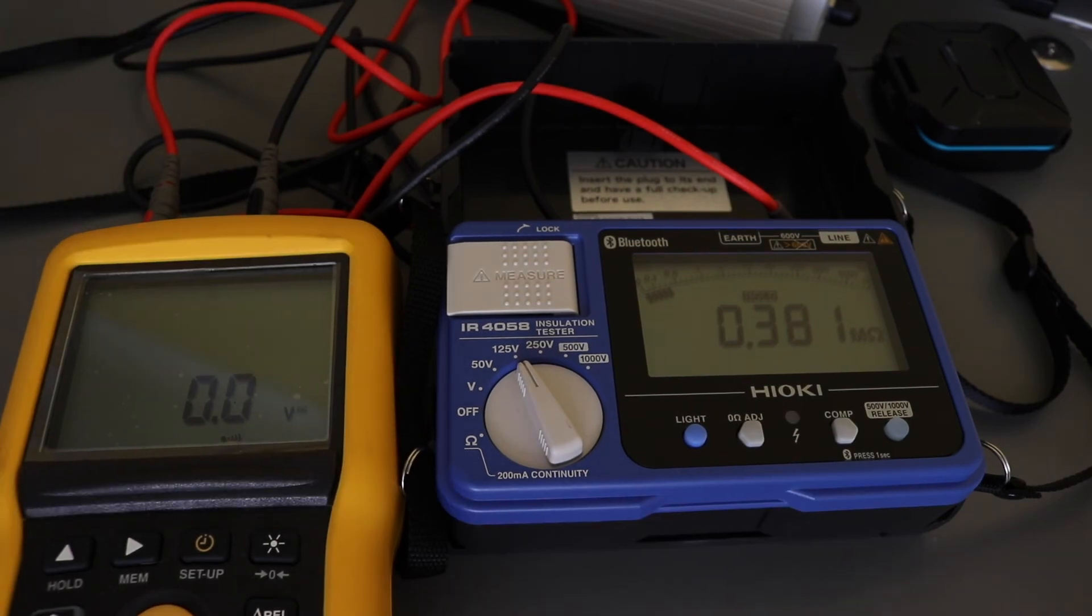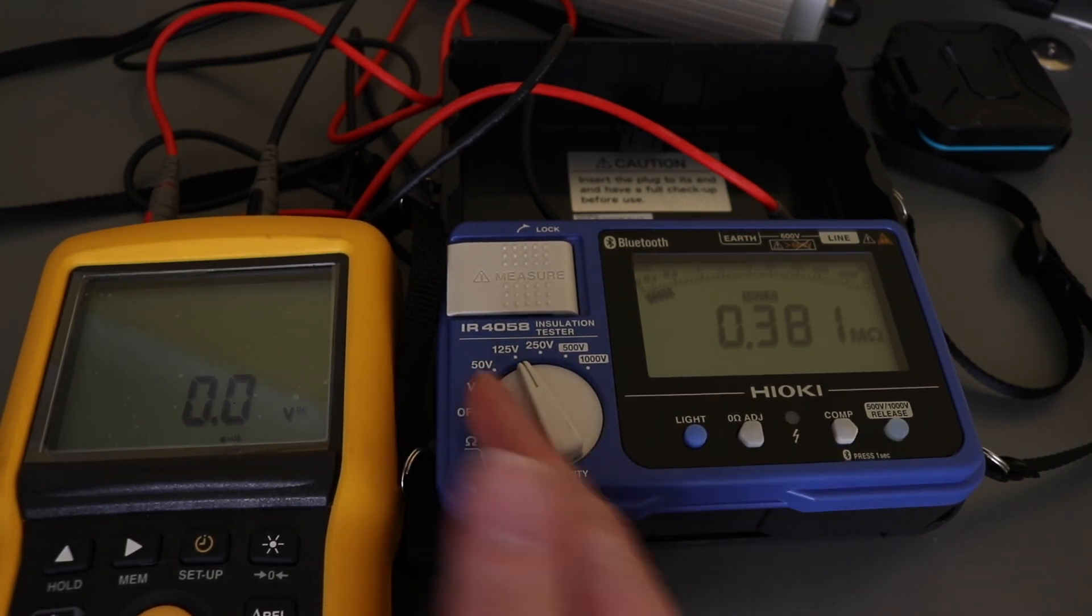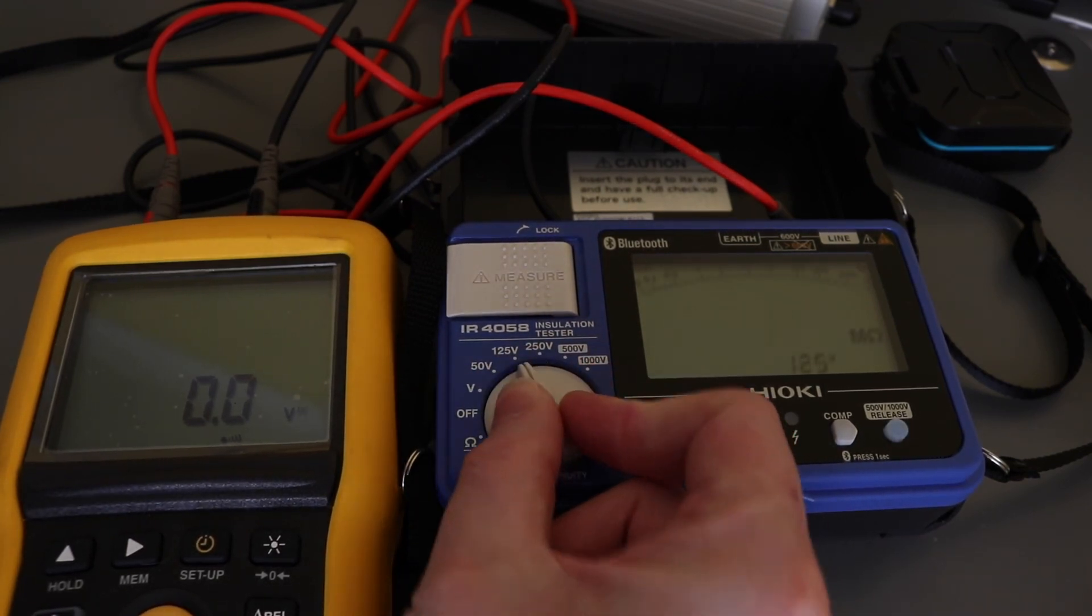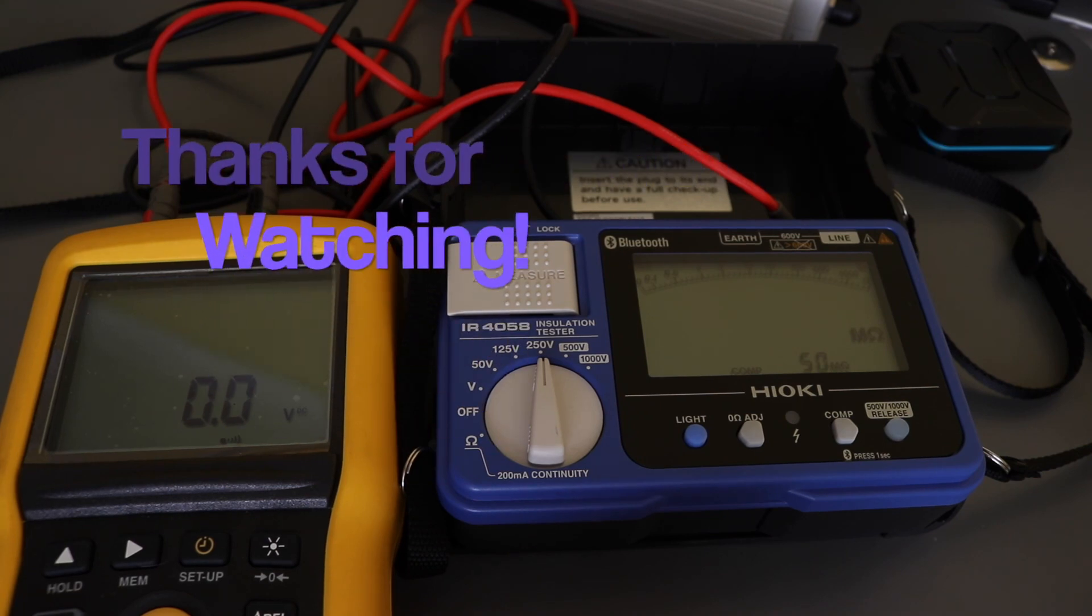So that's about it. It's the Hioki, a very basic insulation tester with ohms function, AC-DC voltage measurement, and 50 to 1000 volt insulation test. Thanks for watching, hopefully it's been useful, and I'll see you in the next video.